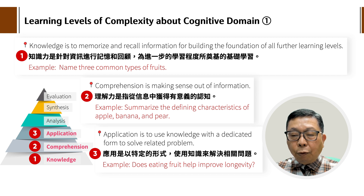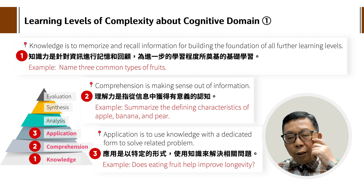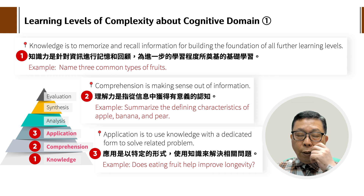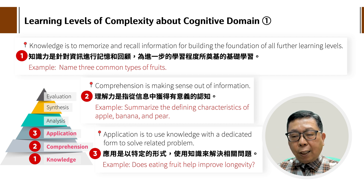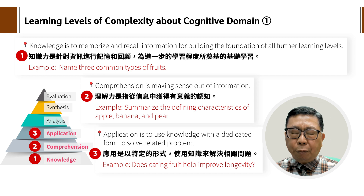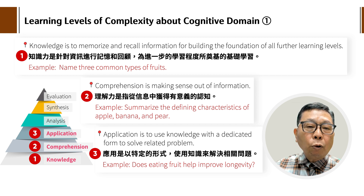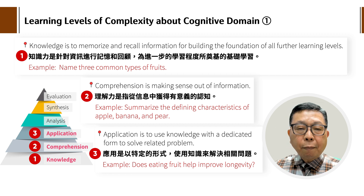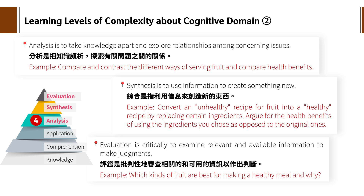例子是：eating fruit helps improve longevity，比如说吃水果是不是可以增加我们的长寿？你就必须应用一些新的观念来解释这个问题。没有关系，你们到时候我出的homework或者办workshop的时候大家可以再discuss，我先做一个抛砖引玉的动作。